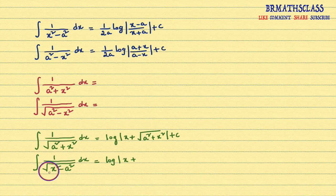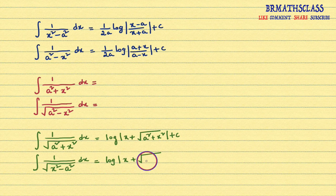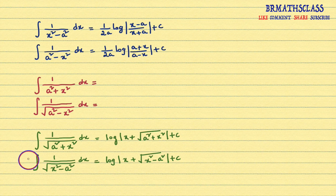Integral of 1 divided by root over x squared minus a squared dx — its answer also starts with log mod x plus. What is there in the denominator? Root over x squared minus a squared plus c. So you can identify these two are of one type and these two are of one type.